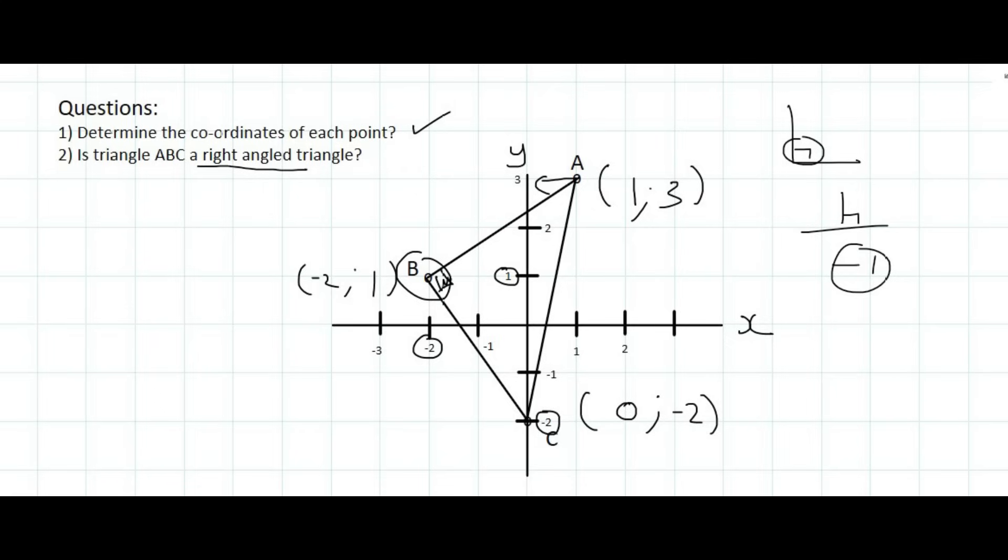So what we could do, is we could work out the gradient of line AB, and the gradient of line BC. Because those are the two lines that are meeting at point B. We could then see if their gradients give us minus 1 when you multiply them together.